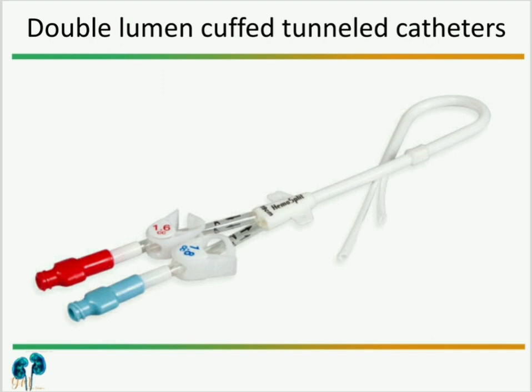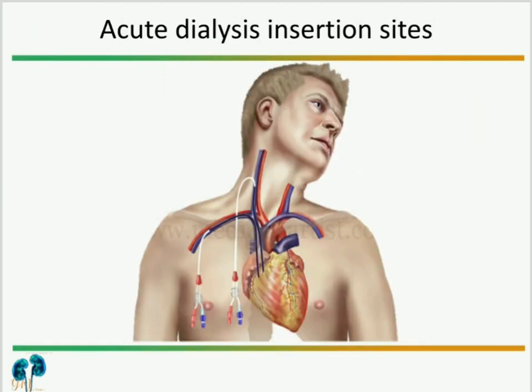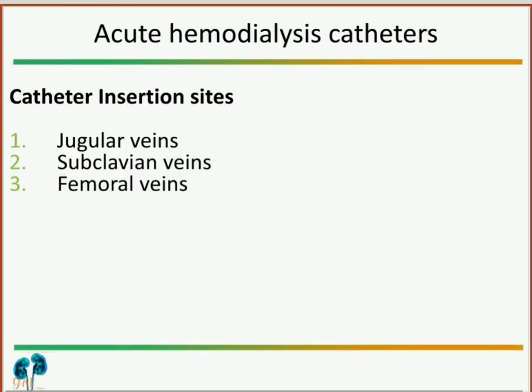This picture shows two sites for acute hemodialysis catheterization: one for internal jugular catheterization and another for subclavian catheterization. We can use the internal jugular vein, subclavian vein, or femoral vein for acute hemodialysis catheterization. These are called catheter insertion sites.